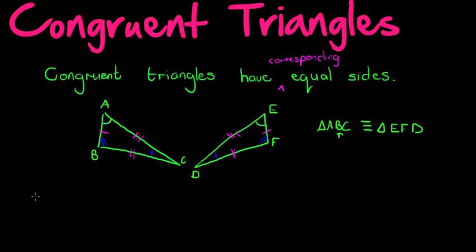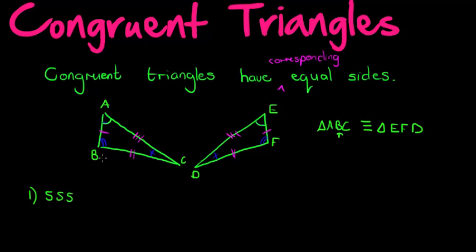To show that two triangles are congruent, I can show that all three sides are equal, and then I'll use the shorthand Side-Side-Side. I've shown that each side is equal to the corresponding other side.